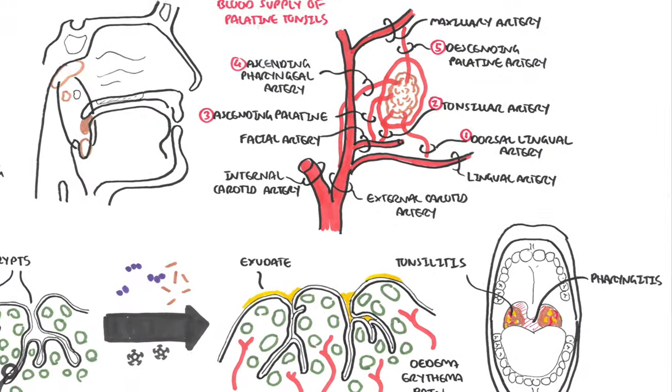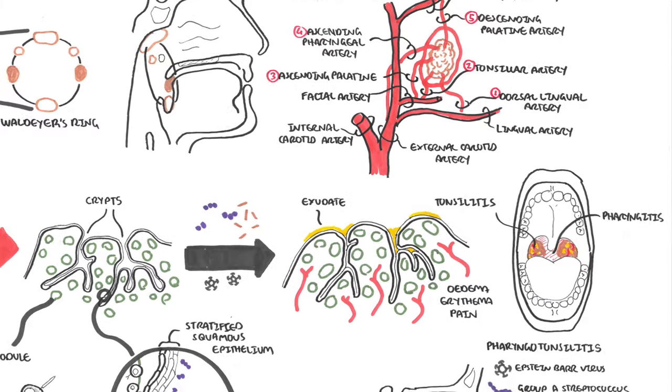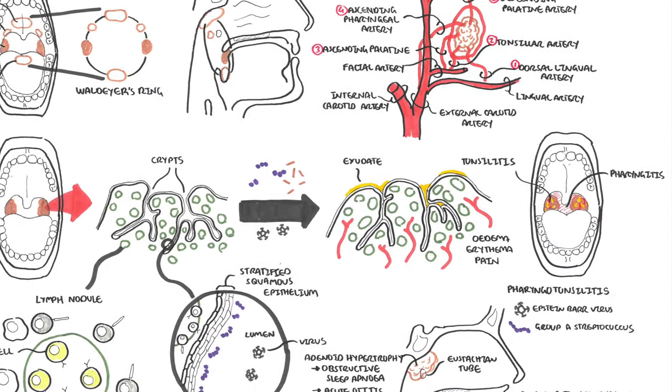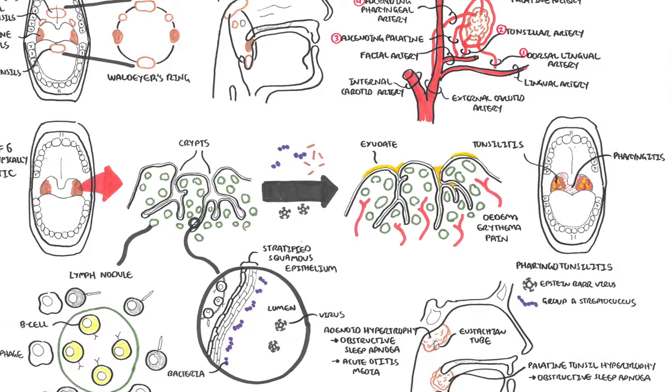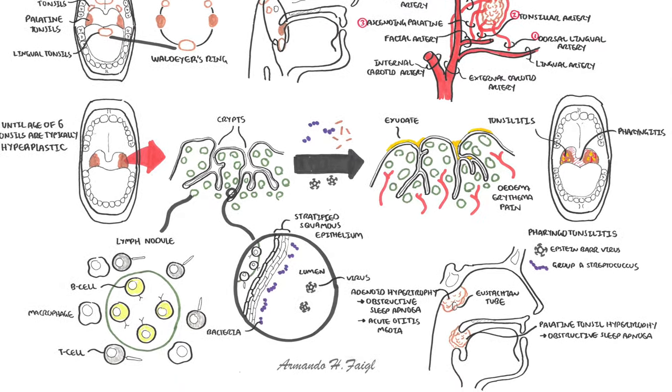The venous drainage is via the peritonsillar plexus, which drains into essentially the facial vein and the internal jugular vein. Sensation is provided via the tonsillar branches of the glossopharyngeal nerve as well as the maxillary division of the trigeminal nerve.